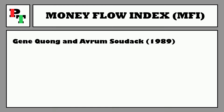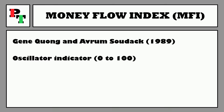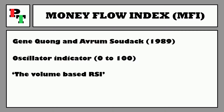The indicator was created by Gene Kwong and Avram Sudak in 1989. It's a momentum-based oscillator with a fixed value range between a minimum of 0 and a maximum of 100. Another frequently used nickname is the Volume Based RSI — a name coined by the creators themselves, who felt the RSI needed a volume aspect to increase its accuracy and usefulness. What came to be from that was the Money Flow Index.